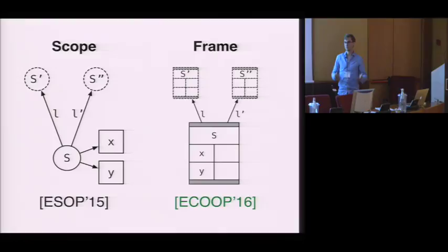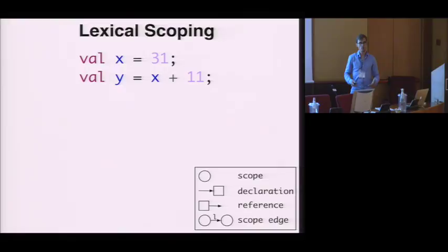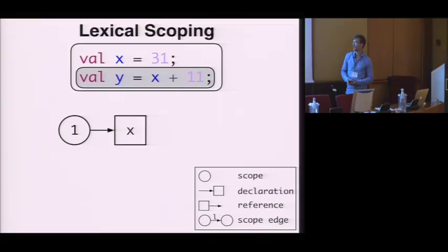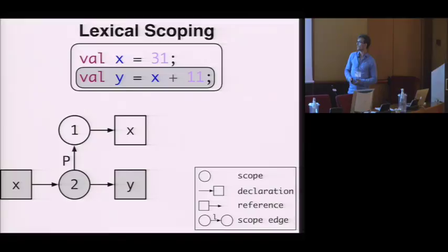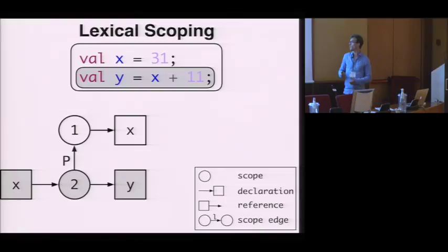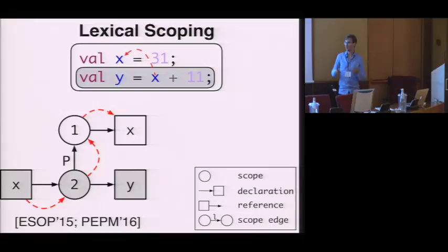Scope graphs were introduced at last year's ESOP, and in this paper we propose to use frames for structuring memory and modeling the dynamic semantics of binding. But before diving into frames, let's first recall how scope graphs work. The idea is that we associate scopes with AST nodes. Here's a simple example with two scopes. In the first scope we have a single declaration for x, and the second scope, which is a lexical child of the first scope denoted by this edge in the graph, we have a declaration and a reference. In order to resolve this graph, we construct a path from each reference to its corresponding declaration, which means that x resolves in our program.